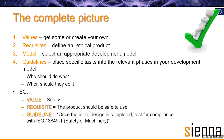A typical example we would expect to see in most technologies is that of safety. The requisite — the characteristic — is very simple: the product should be safe to use. So if it was a piece of machinery, the guideline might very well be something as simple as: once the initial design is completed, test it for compliance against a particular safety standard.